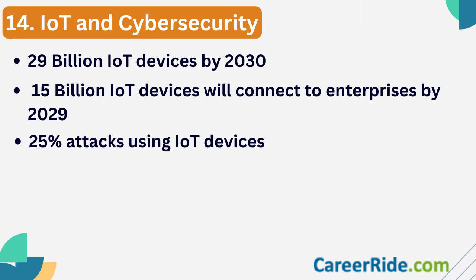Question fourteen: What is the impact of IoT devices on cybersecurity? IoT devices are getting more popular every day. According to a study, there will be more than 29 billion IoT devices in use by 2030, and close to 15 billion IoT devices will connect to enterprise infrastructure by 2029. More than 25% of enterprise attacks will take place using IoT devices — including corporate, guest, trusted, and untrusted devices — posing severe risk to enterprises.